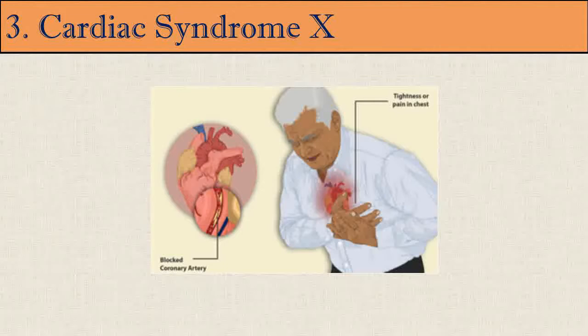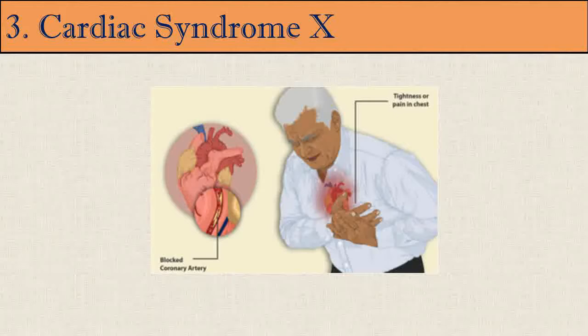The third disease is Cardiac Syndrome X. Some patients referred for evaluation of anginal symptoms with evidence of myocardial ischemia on non-invasive testing have angiographically normal epicardial coronary arteries or coronary arteries with mild disease. This condition was labeled Cardiac Syndrome X due to uncertainty about its pathogenesis; the more appropriate term is microvascular angina, caused by problems with the tiny arteries within the heart muscle that regulate blood supply.